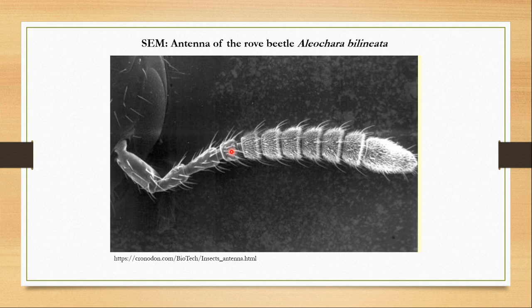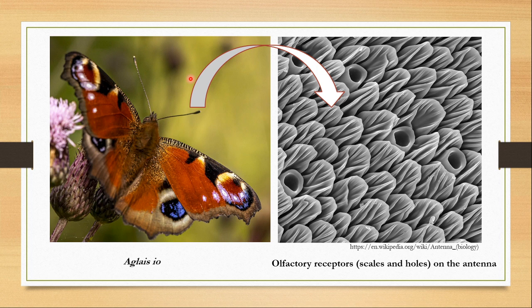In the case of butterflies, the knob-like structure of the antenna — if you dissect it and look under an electron microscope — you would find many scales as well as holes. You would see the hair-like structures or sensilla, scales, and holes. But mainly they help in perceiving smell.